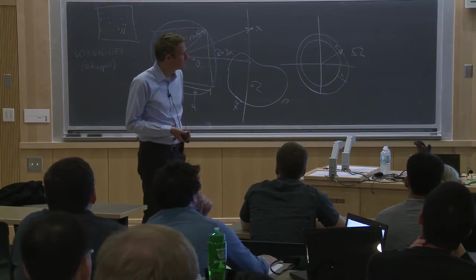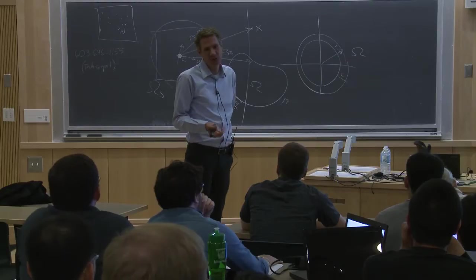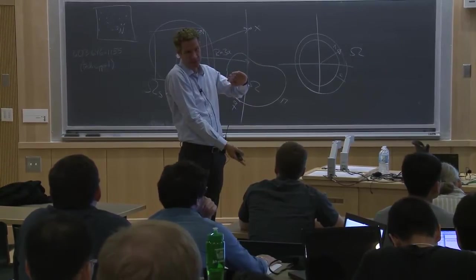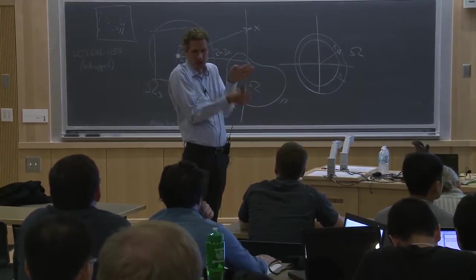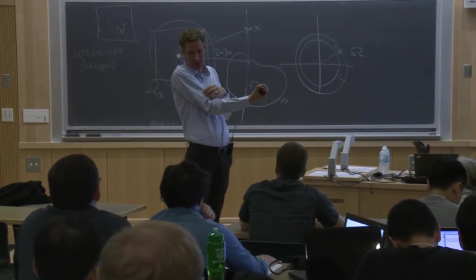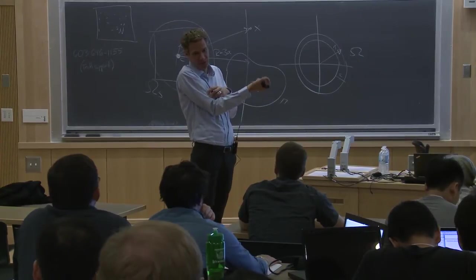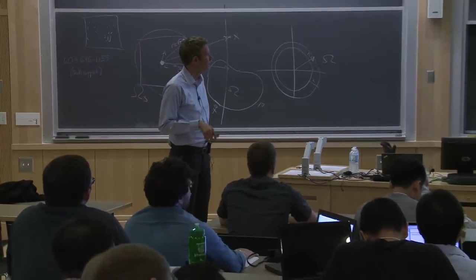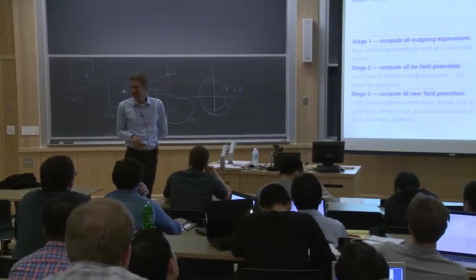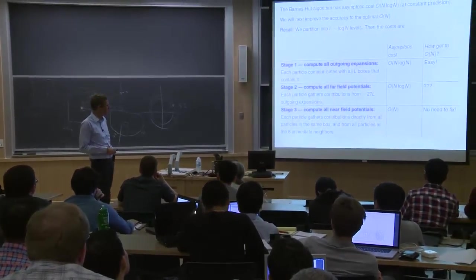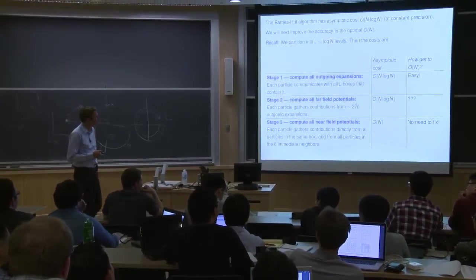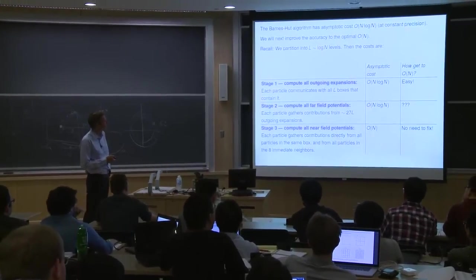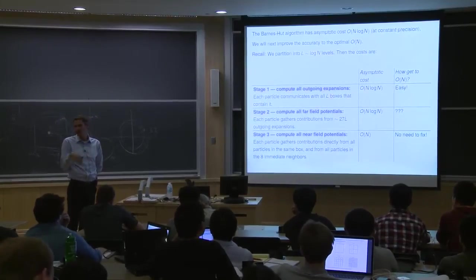If you wanted to use the FFT for boundary integral equations, you'd need to put a uniform grid on R³ that finely resolves the surface — this gets very expensive. Whereas for the FMM it's only moderately more expensive. So that's the answer to why not use the FFT. In Barnes-Hut we have too much communication — each particle is talking to too much of the rest of space. Can we localize things? How do we get rid of this extra communication?